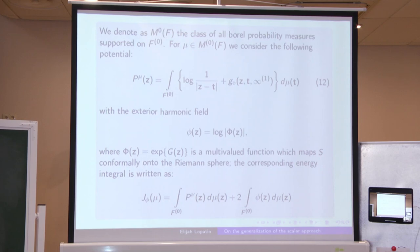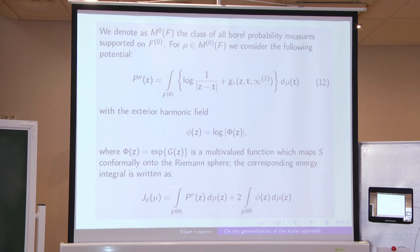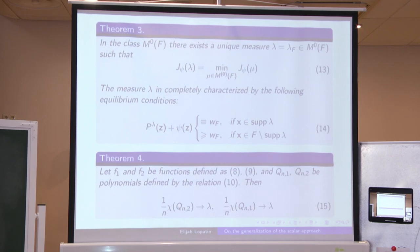Now all is ready to formulate the main result. Here is the potential on the full Riemann surface, with respect to this kernel. The exterior harmonic field is defined as the logarithm of the modulus of the multi-valued function which maps our surface conformally onto the Riemann sphere — it is single-valued in modulus, so the function is defined correctly. Here is the corresponding energy functional, and the statement of the result is quite similar to the theorem of Suetin.